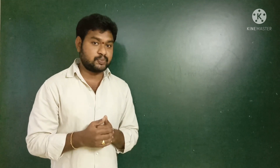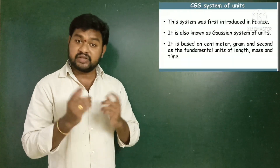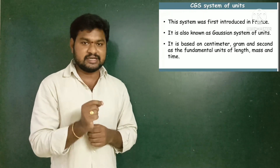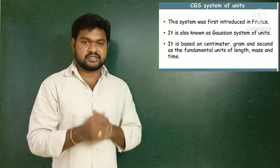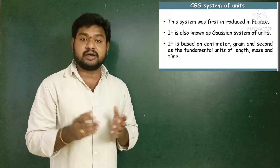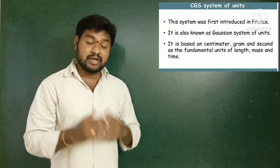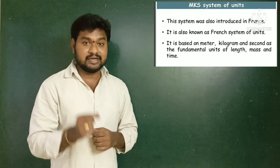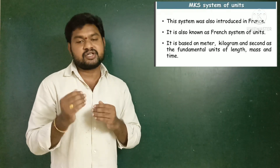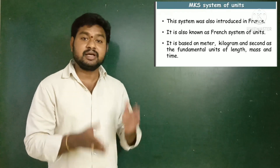We have different systems of units. The first is the CGS system — CGS refers to centimeter, gram, second. This system was introduced in France and is also called the Gaussian system of units, where centimeter, gram, and second are the fundamental units of length, mass, and time respectively. The next is the MKS system — MKS means meter, kilogram, second. This system was also introduced in France and is called the French system of units, where meter, kilogram, and second represent the fundamental units of length, mass, and time.